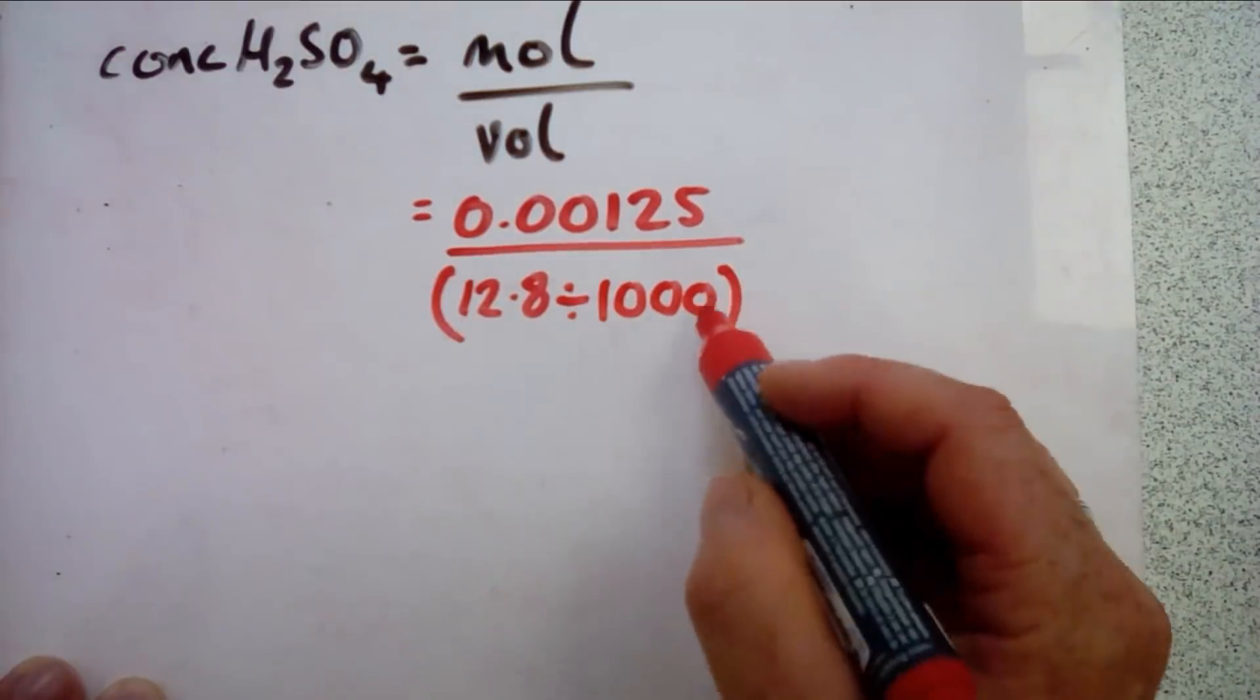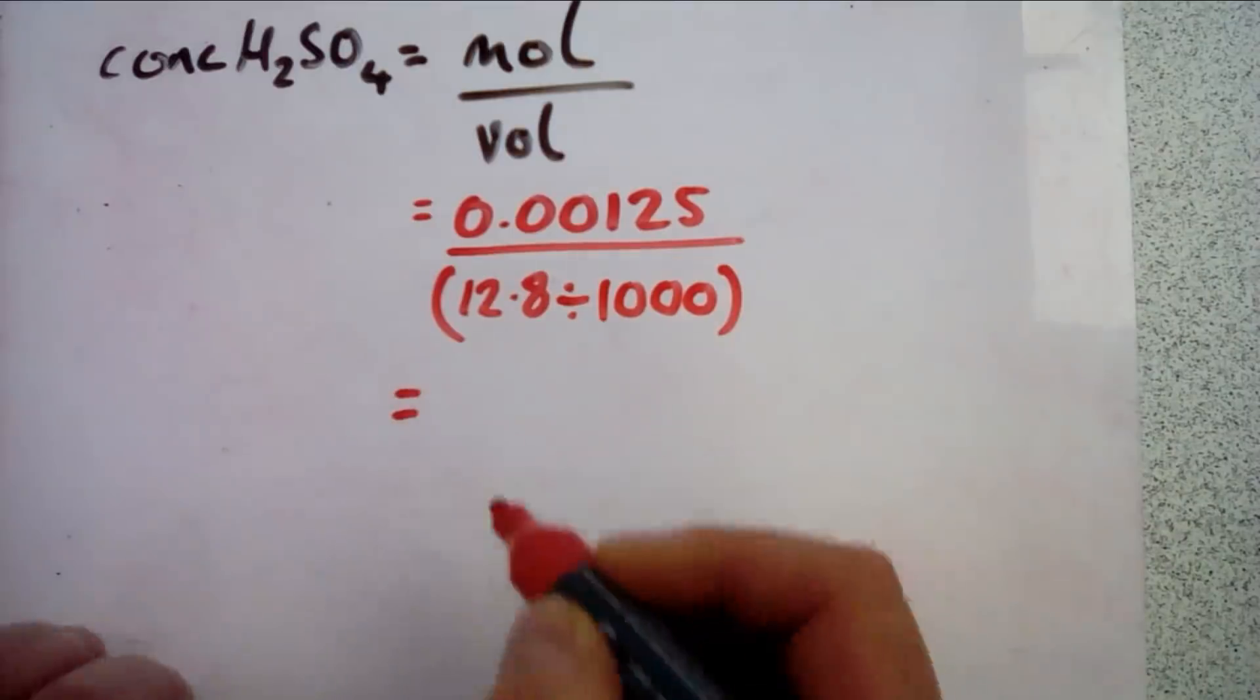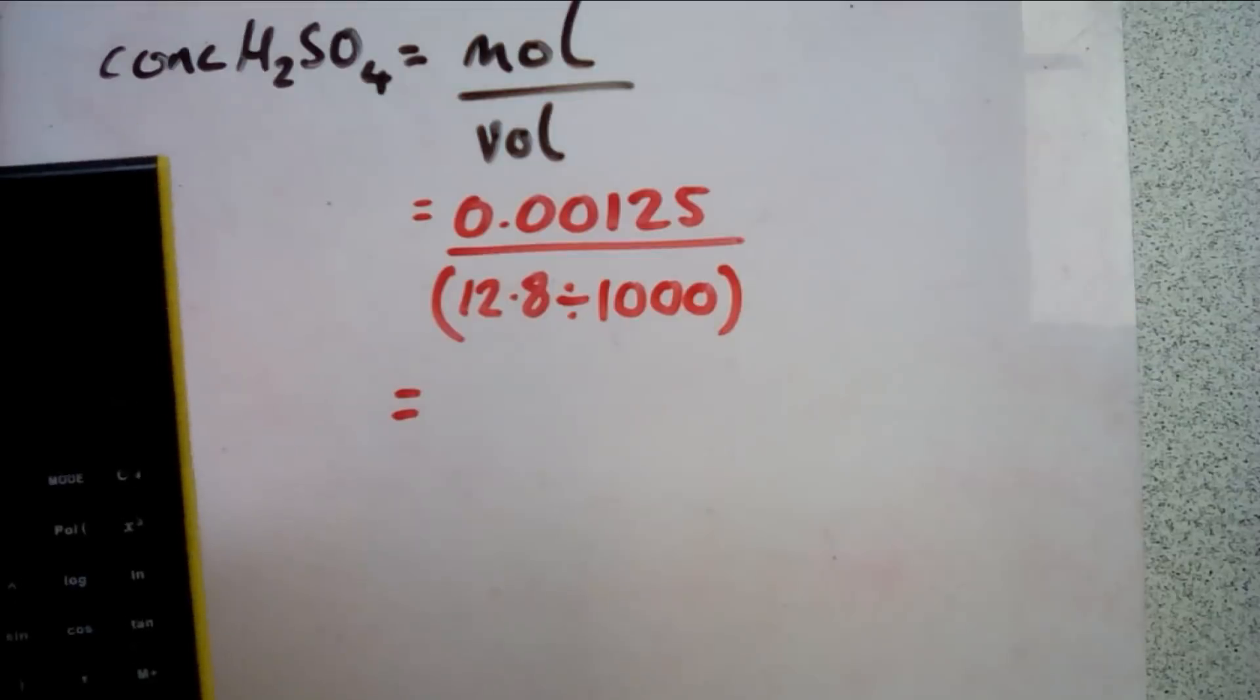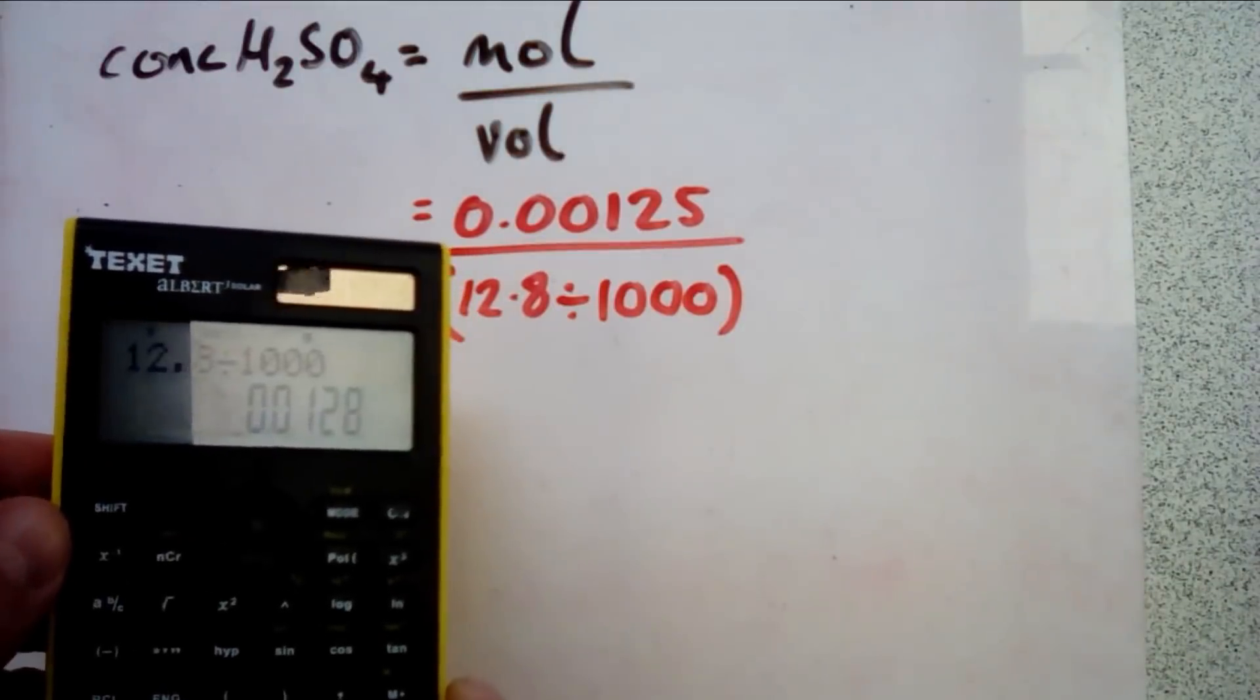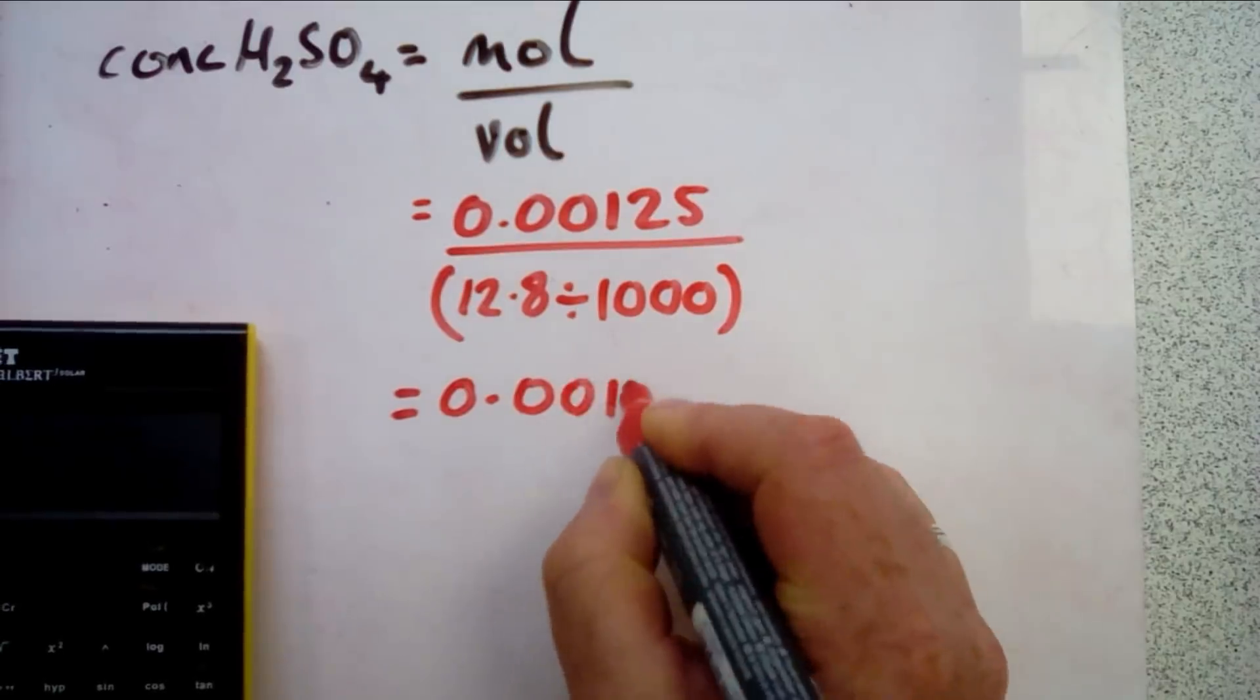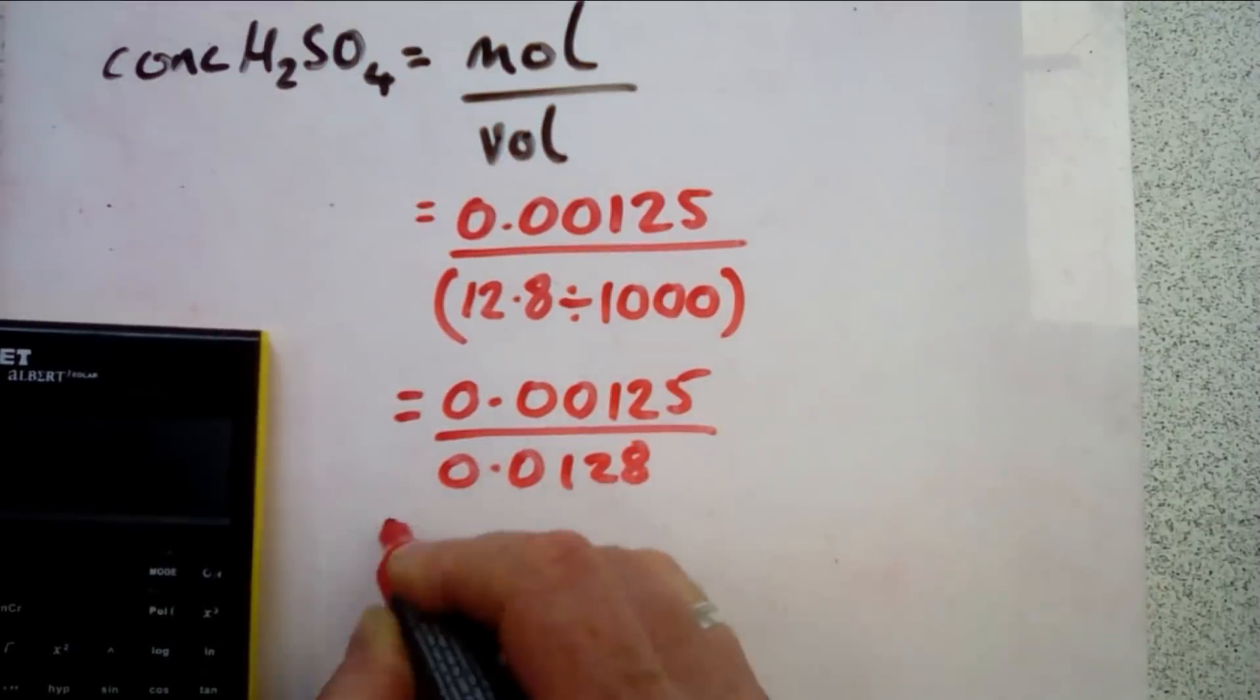We need to do that bit first before we divide it into 0.00125. Back to our trusty calculator: 12.8 divided by one thousand gives us an answer of 0.0128. So we've got 0.0125 over 0.0128.